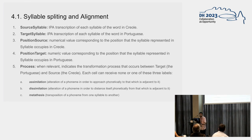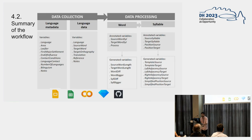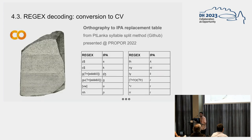We had a description of the variables in the protocol: first data collection, then data processing in two stages. The first stage was human processing — annotated variables that students should annotate manually. Then from the manual annotations, we could generate more variables through formulas. After data collection, we also proceeded to data normalization using regex expressions in Python, so the students could get experience with Python.